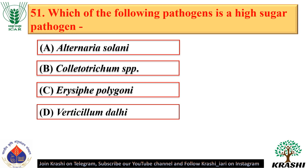Question number 51. Erysiphe polygoni is a high sugar pathogen — option C.